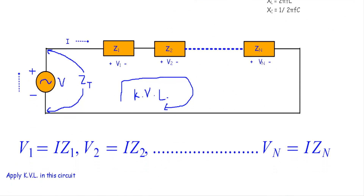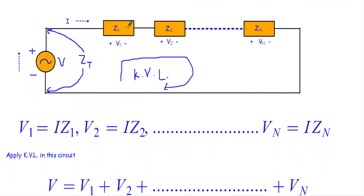Now let's say we have several impedances — a total of n impedances, Z1, Z2, up to Zn — connected in series. One end of Z1 is connected at one terminal, the other end is connected to the next impedance, and so on. These impedances may contain resistors, inductors, capacitors, or a combination of them.